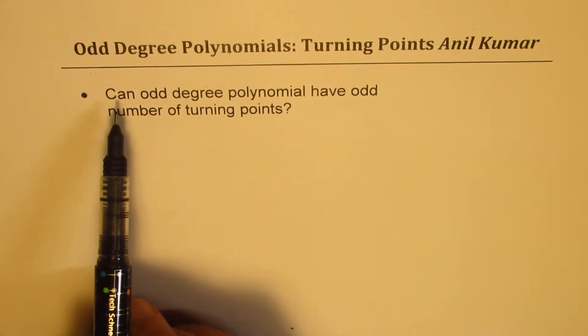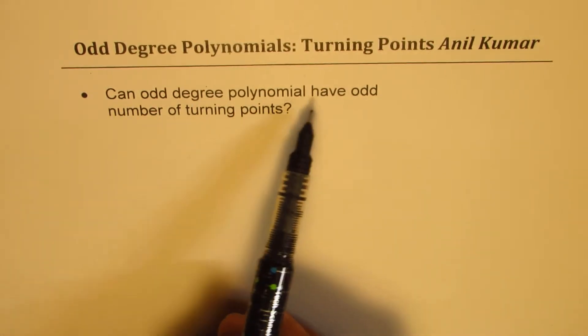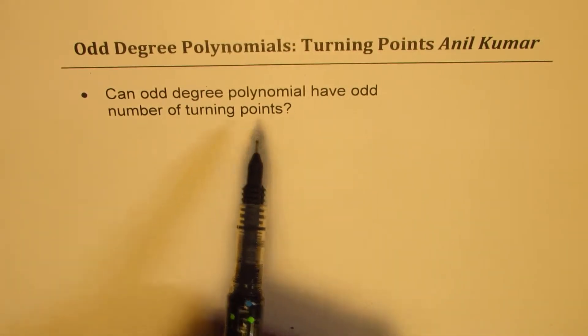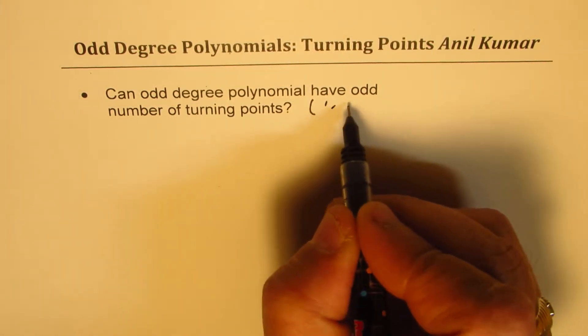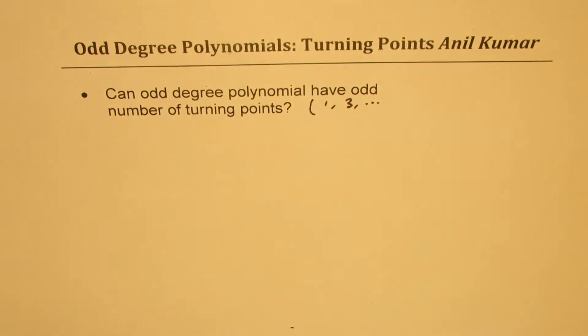The question is, can odd degree polynomial have odd number of turning points? That is to say, can it have turning points like one turning point, three turning points, or so on? That is the question for you.